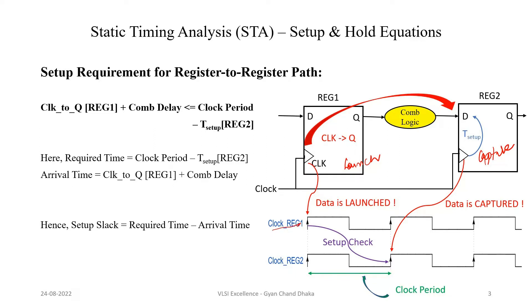Clock_reg1 is the register 1 clock, and Clock_reg2 is the register 2 clock. The data is launched at the positive edge of Clock_reg1 of the launch flip-flop. As discussed previously, the data will be captured at the next clock edge of the capture clock. This check is called a setup check. We have the clock period — data is captured at one clock edge and launched at the previous clock edge.